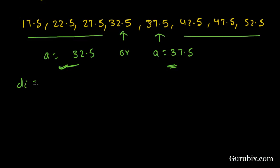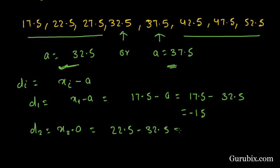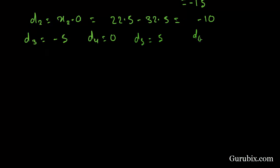Now we calculate Di, where Di equals Xi minus A. So D1 equals 17.5 minus 32.5, which equals minus 15. D2 equals 22.5 minus 32.5, which equals minus 10. Similarly, D3 is minus 5, D4 is 0, D5 is 5, D6 is 10, D7 is 15, and D8 is 20.